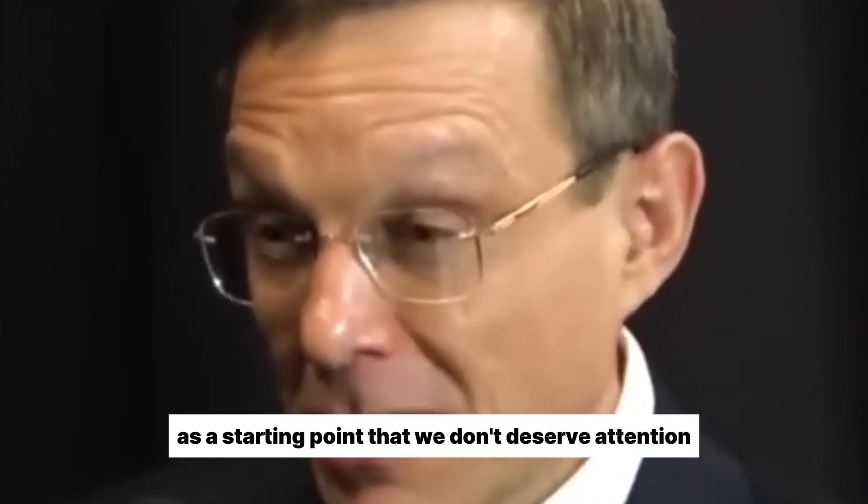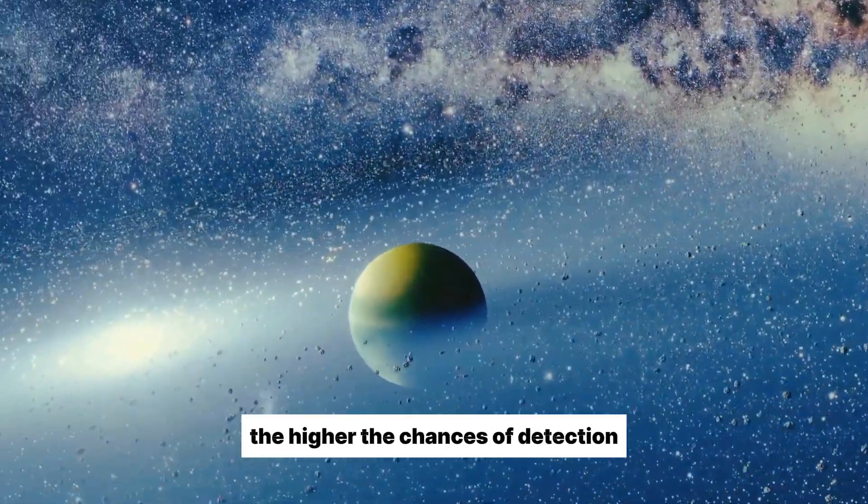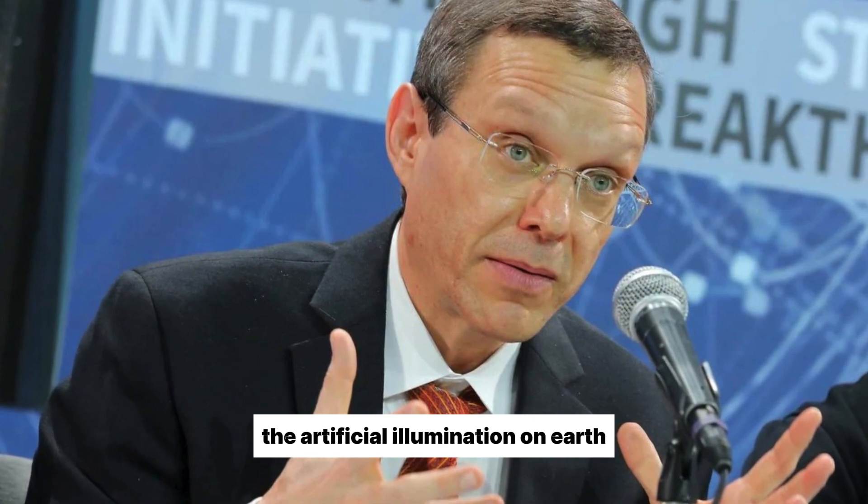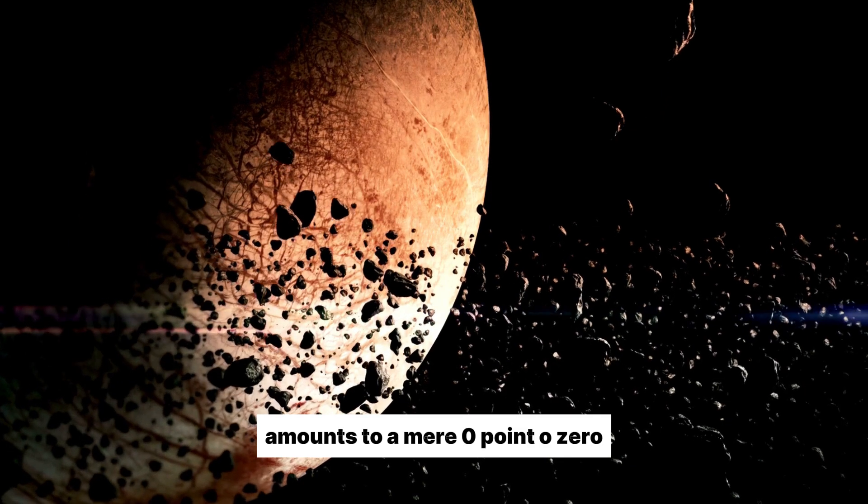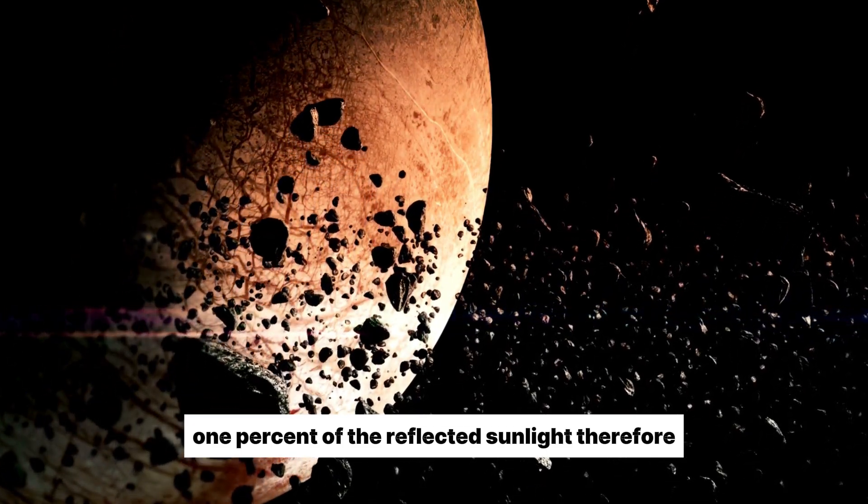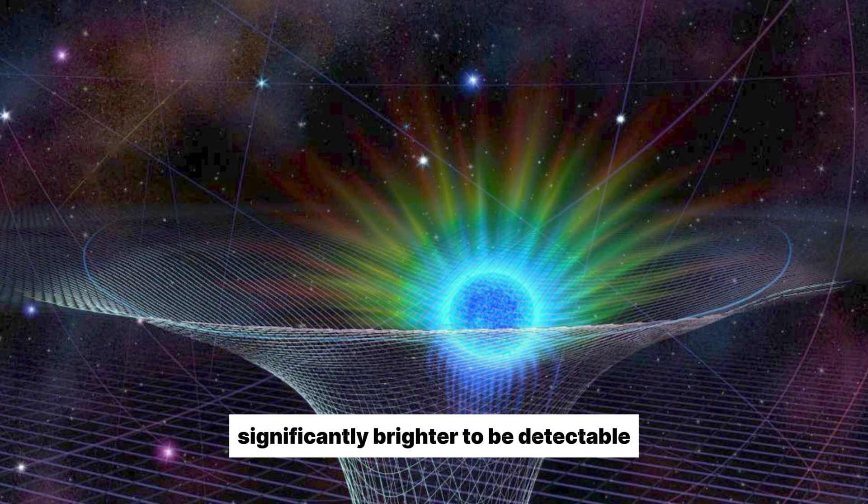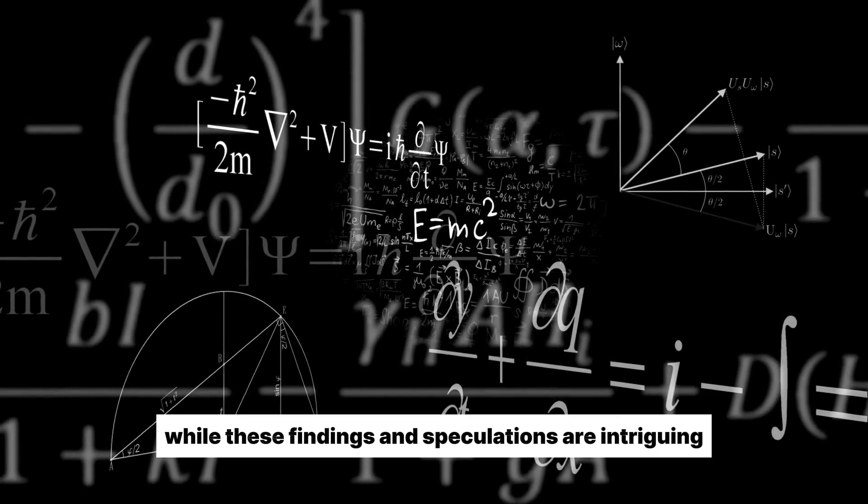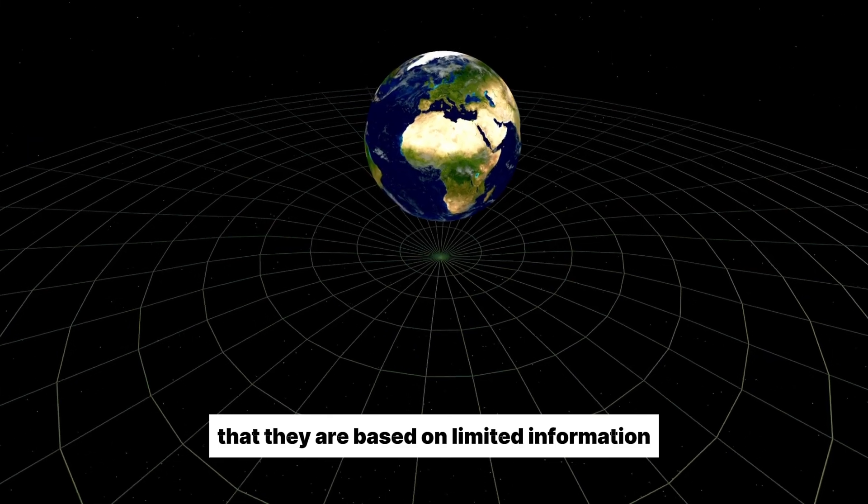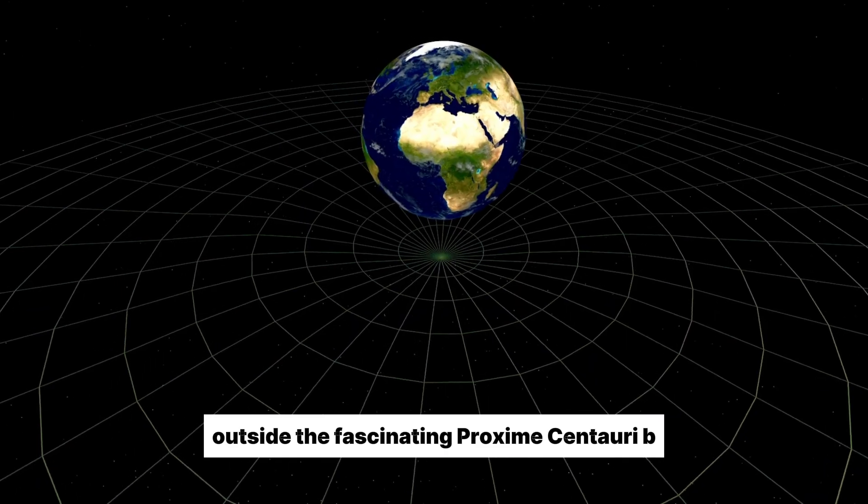The more intense the artificial illumination, the higher the chances of detection. For comparison, the artificial illumination on Earth amounts to a mere 0.01% of the reflected sunlight. Therefore, the lights on Proxima Centauri B would need to be significantly brighter to be detectable. While these findings and speculations are intriguing, it is important to note that they are based on limited information and theoretical models. Outside the fascinating Proxima Centauri B, there is something equally interesting to consider.